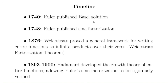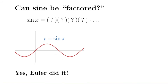Euler published his Basel solution in 1740 and this really shocked the world of mathematics, but he didn't actually publish a formal treatment of the sine product until a few years later. And it wasn't until more than a hundred years later that Weierstrass and Hadamard fully and rigorously verified the sine factorization. Weierstrass provided a general framework for writing entire functions as infinite products over their zeros — the so-called Weierstrass factorization theorem. Entire functions are functions differentiable in a complex sense on the entire complex plane. Hadamard developed a growth theory of entire functions involving the order and type of an entire function, and this allowed Euler's sine factorization to finally be verified, though fully understanding the details requires a significant amount of complex analysis.